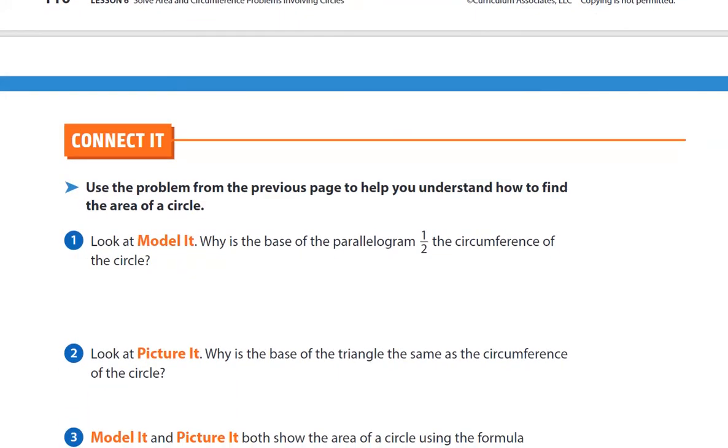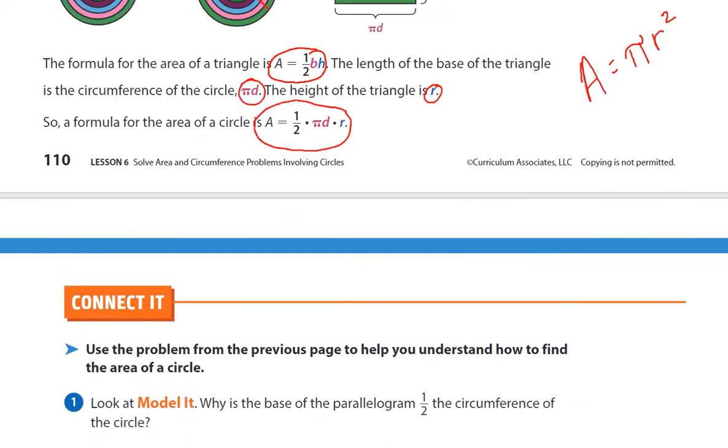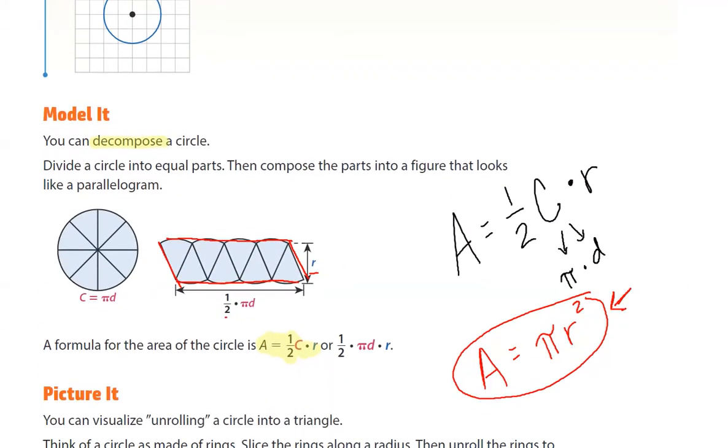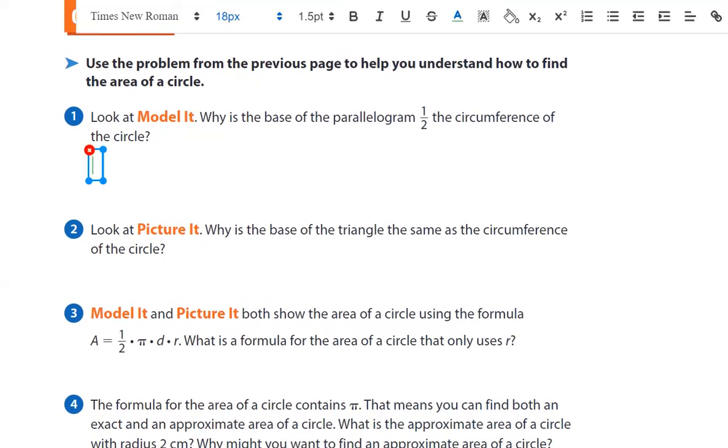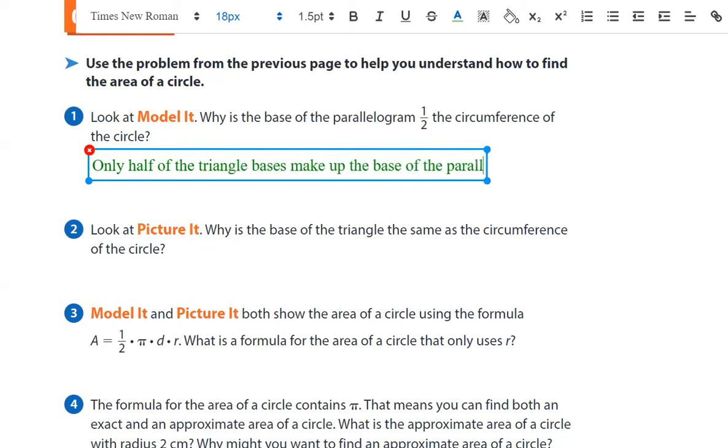Number one. Look at model it. Why is the base of the parallelogram half the circumference of the circle? So the base of the parallelogram is half the circumference of the circle because only half of the circle parts are down here. Only half of the triangle bases make up the base of the parallelogram.